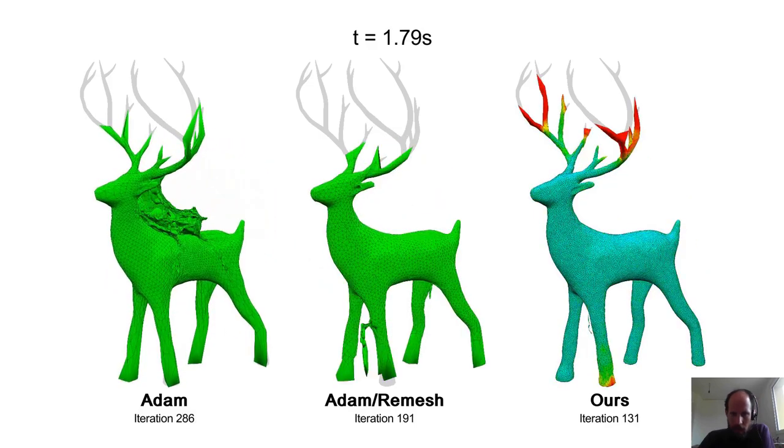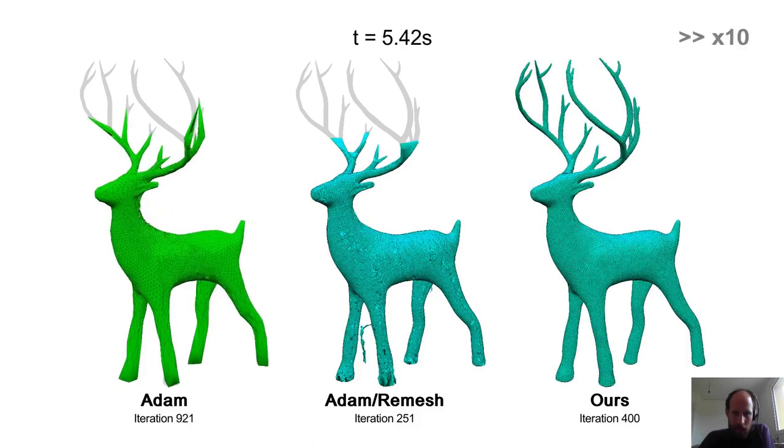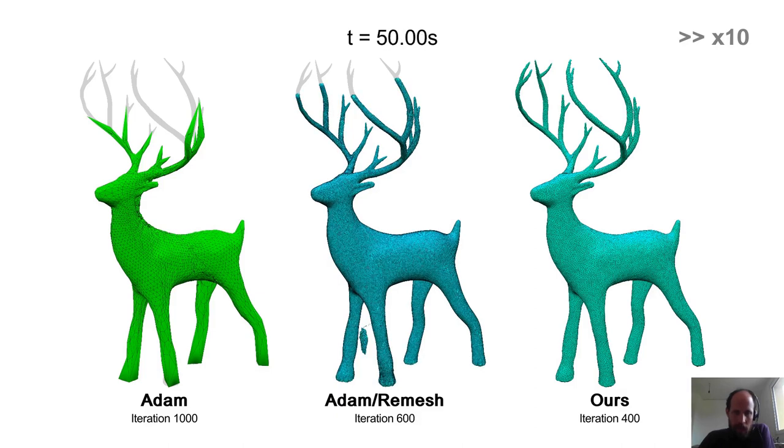This is a video of the deer object. As you can see, the adaptive remeshing of our method finds good triangle size for reconstructing the antlers quickly. And the baseline method, even after 50 seconds of optimization, are not able to completely reconstruct the model.